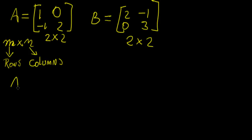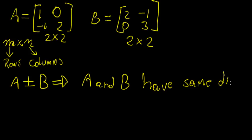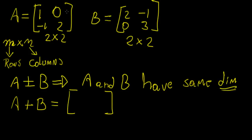The operation of addition or subtraction is possible if A and B have the same dimensions. In this case, we have two by two matrices, so we can perform this operation. Let's start with A plus B — that's going to be a two by two matrix, so the result is going to be a matrix of the same dimensions.